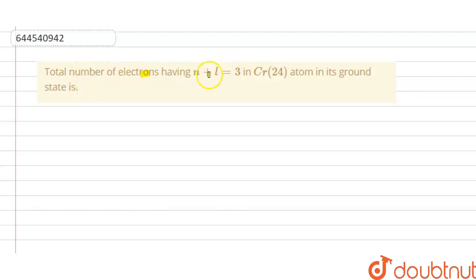Hello students, today our question is: total number of electrons having n plus l equals 3 in the chromium 24, that is the atomic number, atom in its ground state. So the solution of this question is we have given here chromium, that is Z equals 24, that is atomic number.